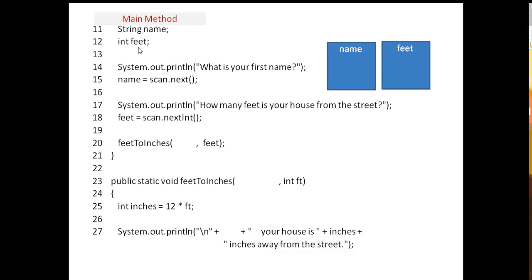name and feet. And then the question, what's their first name, the user then types in a name, let's just say bill just for kicks, and then they're asked how many feet their house is from the street, let's say the user types 50, and so this is stored in this variable.